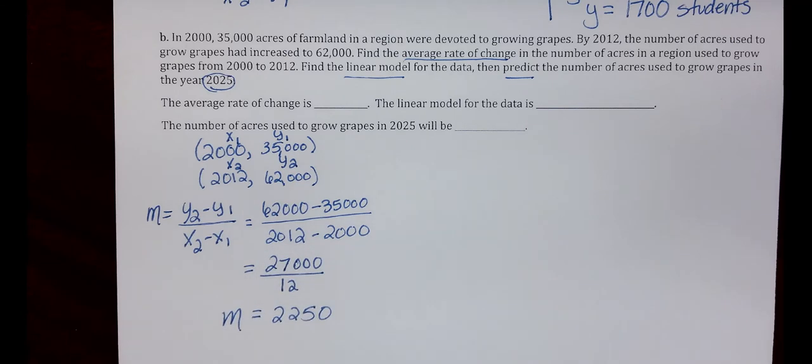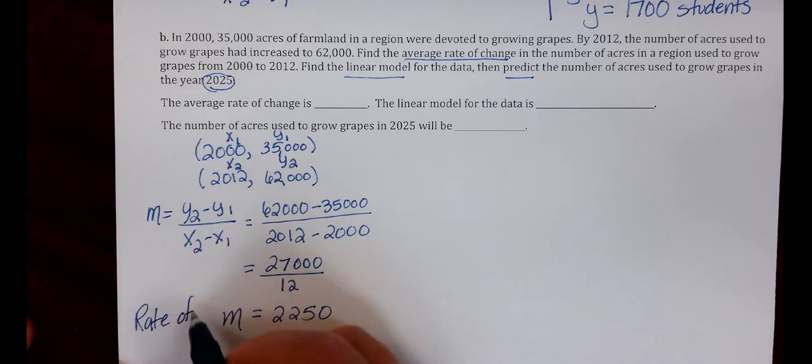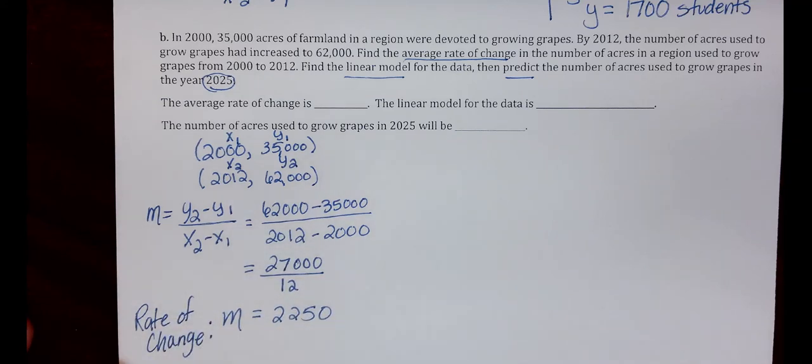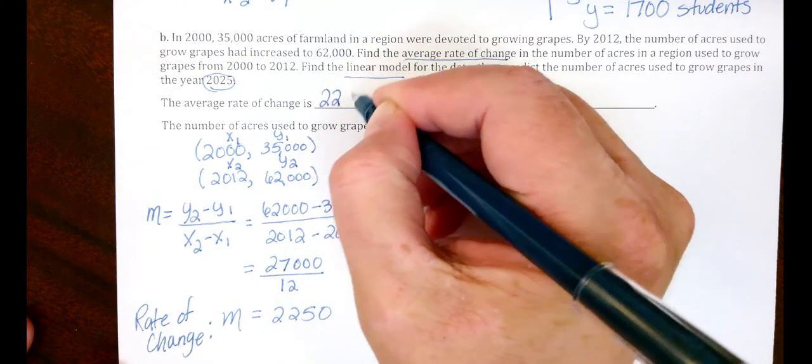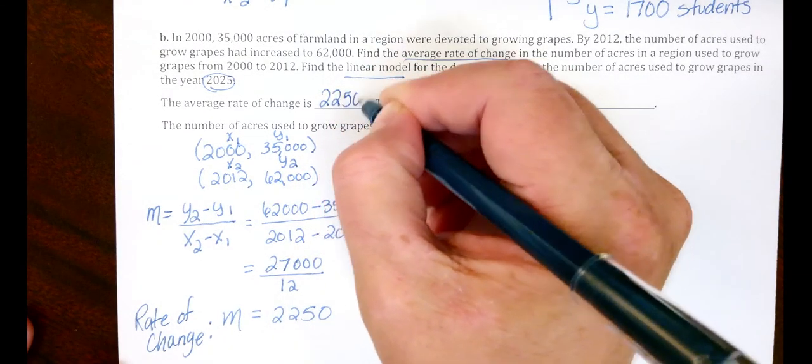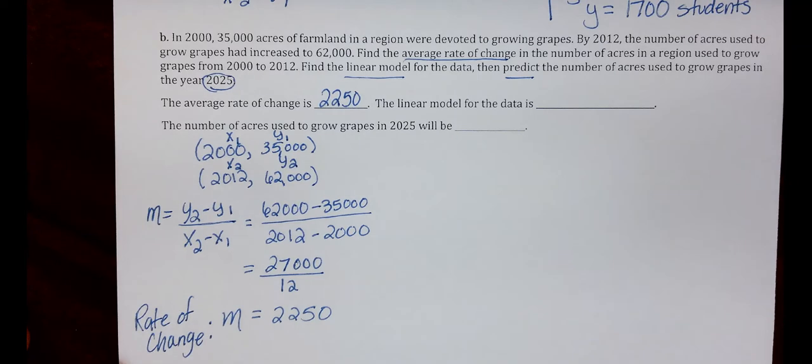Slope is the same thing as rate of change. We can go up and fill in this blank. The average rate of change is 2,250 acres of farmland per year.